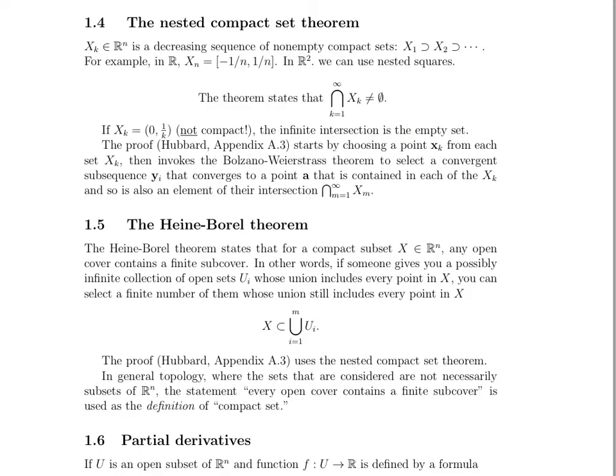The proof, which is in the appendix of Hubbard, starts by choosing a point from each of the sets. That invokes the Bolzano-Weierstrass theorem to select a convergent subsequence y sub i that converges to a point a, which is contained in each of the x sub k's and so is also an element of their intersection because it's in each of them. That's the general idea of the proof.